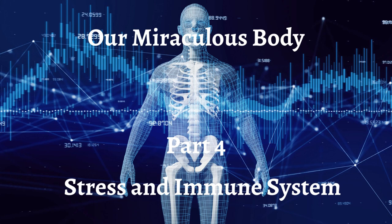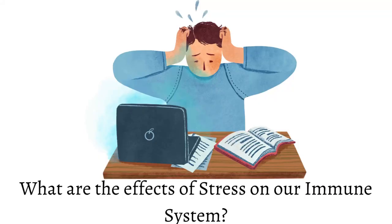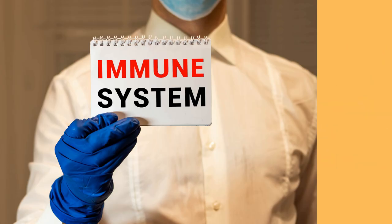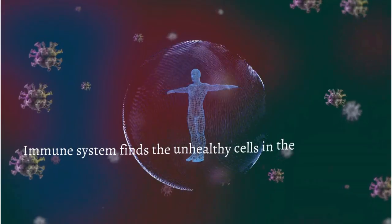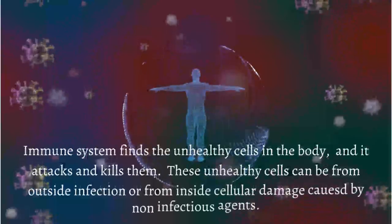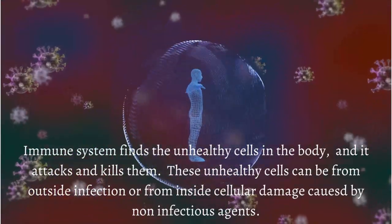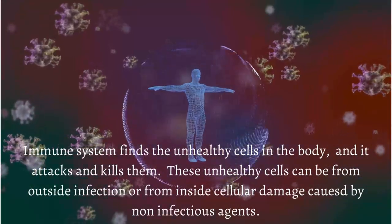Our miraculous body, part 4: stress and immune system. What are the effects of stress on our immune system? First of all, what exactly is the immune system? In simple words, the immune system is a complex network of cells, organs, tissues, and proteins that defends the body against infection. The immune system finds the unhealthy cells in the body and attacks and kills them. These unhealthy cells can be from outside infection or from inside cellular damage caused by non-infectious agents.